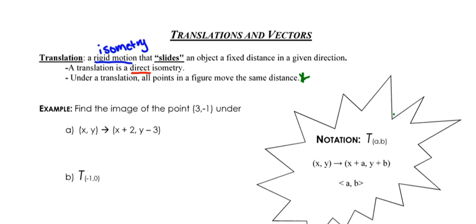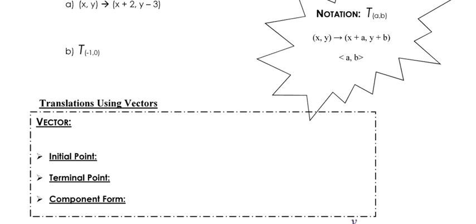Sometimes for students the notation is the trickiest part about doing translations, because we have three different rules that we can use to describe the exact same translation. We might see a capital T for translation with numbers in parentheses — somewhat like an ordered pair with an A value and a B value. That is the same as using the algebraic rule, which adds or subtracts some A and B value from any ordered pair. The third way is component form, which uses pointed parentheses. These three notations all mean exactly the same thing.